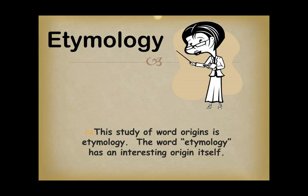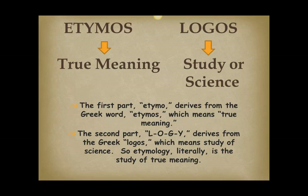This study of word origins is etymology. The word etymology has an interesting origin itself. The first part, etymo, derives from the Greek word etymos, which means true meaning. The second part, logy, derives from the Greek logos, which means study of science. So etymology literally is the study of true meaning.